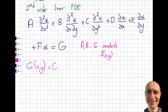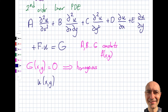Very similar to ODEs: if g(x,y) = 0, I call this the homogeneous case — the same terminology applies here. The goal is to find the solution u(x,y) from this equation. The solution is a function in the xy-plane, since x and y are the independent variables.